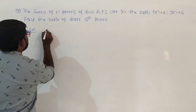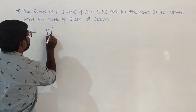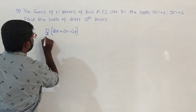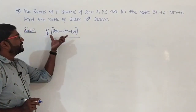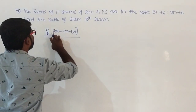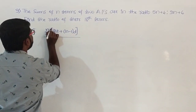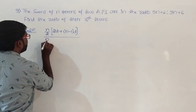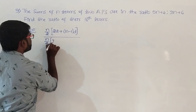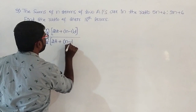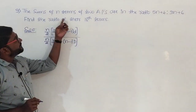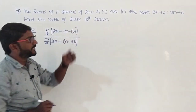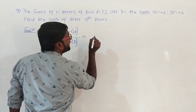So it is n by 2 times 2a plus n minus 1 into d — this is the sum of n terms of the first AP. For the second AP, we take the first term as capital A and common difference as capital D to distinguish. So n by 2 times 2A plus n minus 1 into capital D. The sums are in the ratio 5n plus 4 divided by 9n plus 6.